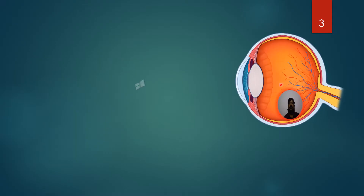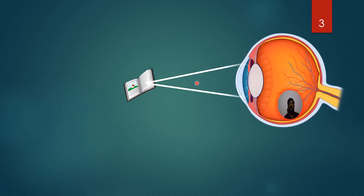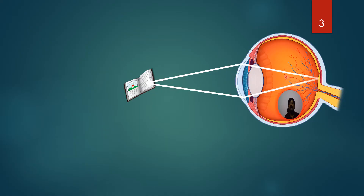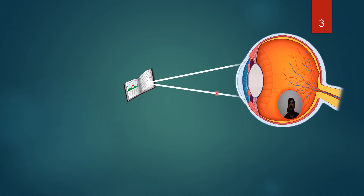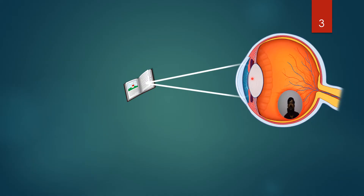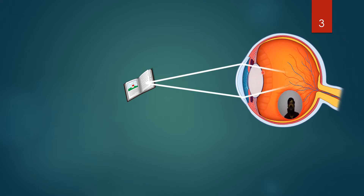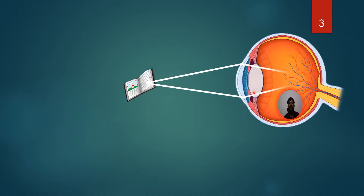When observing nearby objects, in the case of a normal person, the image is formed exactly on the retina. The rays coming from nearby objects are diverged rays. To make the final image on the retina, the eye lens has to adjust itself. This is known as the autofocus ability of the eye lens, also called accommodation of the eye lens.